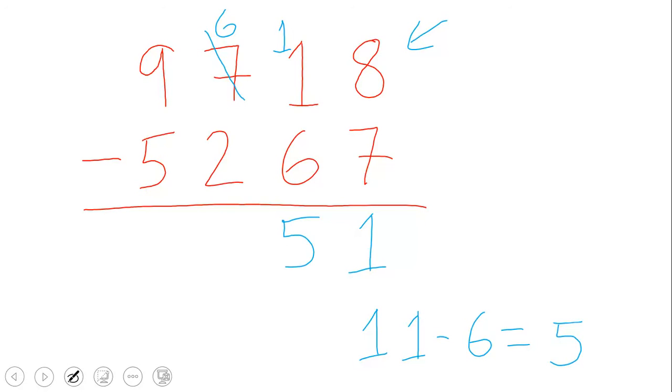So let us move over to the next column, the hundreds column. And we say what? Six minus two. What is six minus two? Six minus two is four. Six minus two is four. So we place the four right here below the two.